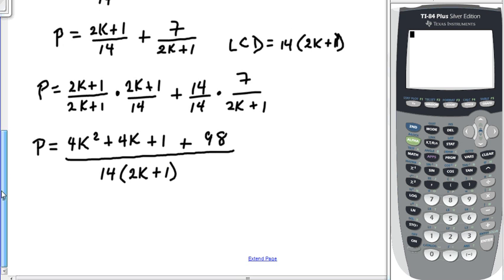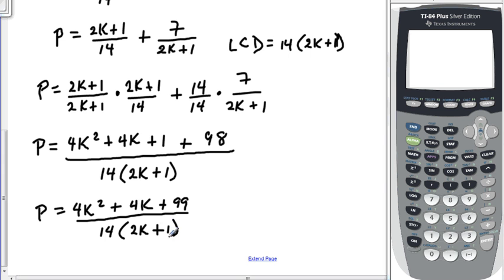We are almost done here. All we have to do now is combine the like terms that are on the top and realize the only like terms that we have are the 1 and the 98. So, our final answer is 4K squared plus 4K plus 99 divided by 14 times 2K plus 1.